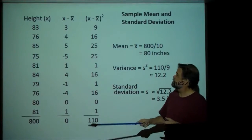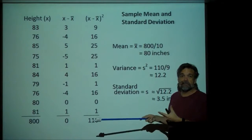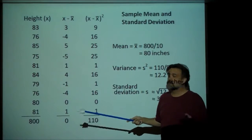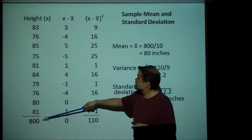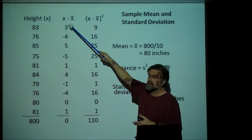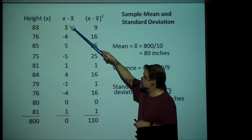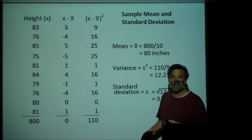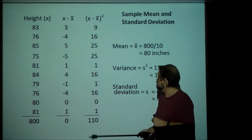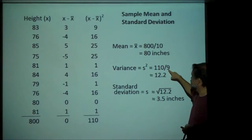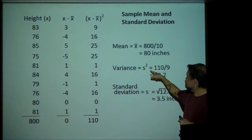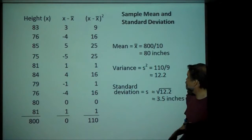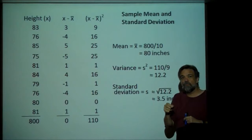Here we have the exact same calculations, except for a sample instead of for a population. Calculating the sample mean is exactly the same. The distance or difference between each data point and that sample mean — exactly the same. When we sum up the squares of those differences, it's exactly the same. The only difference in these calculations is right there: when you're calculating the sample variance, instead of dividing by n, you divide by n minus one — one less.